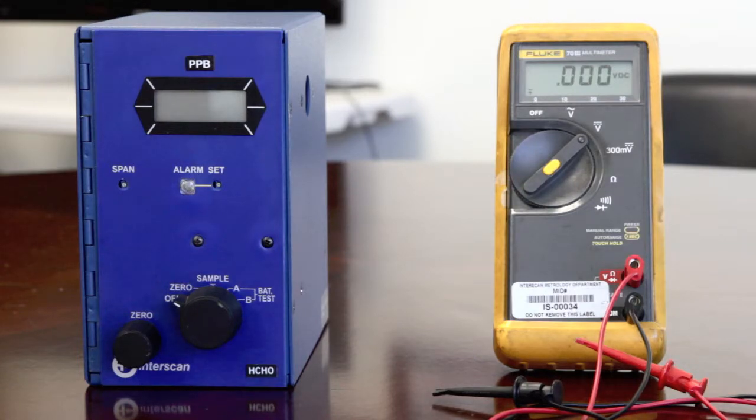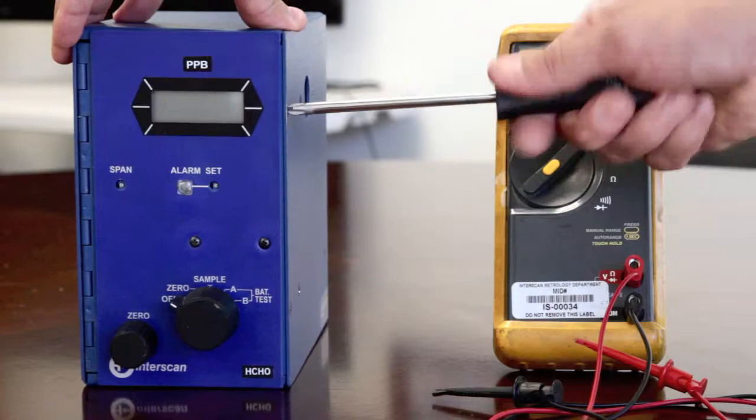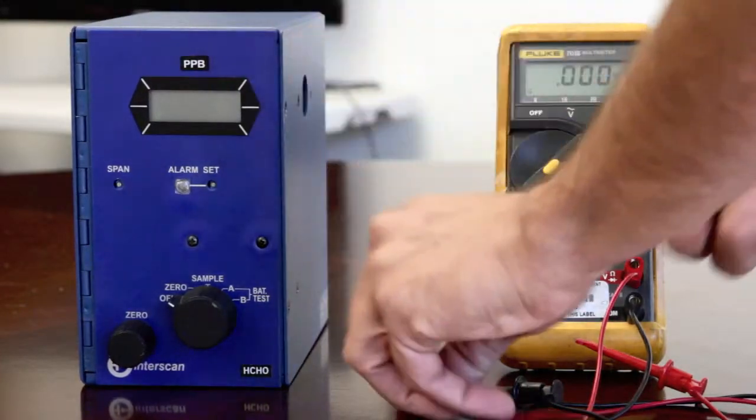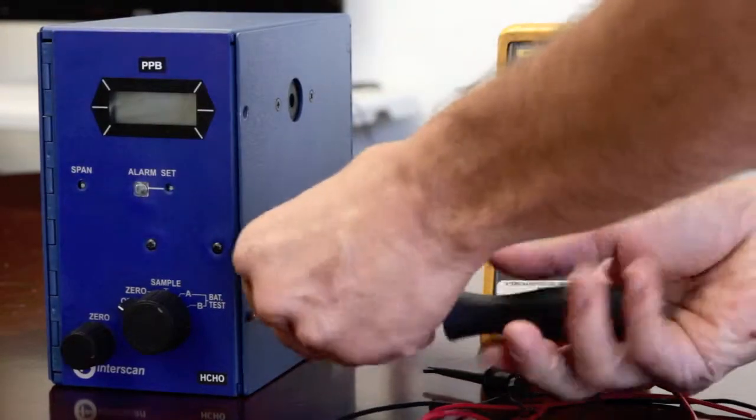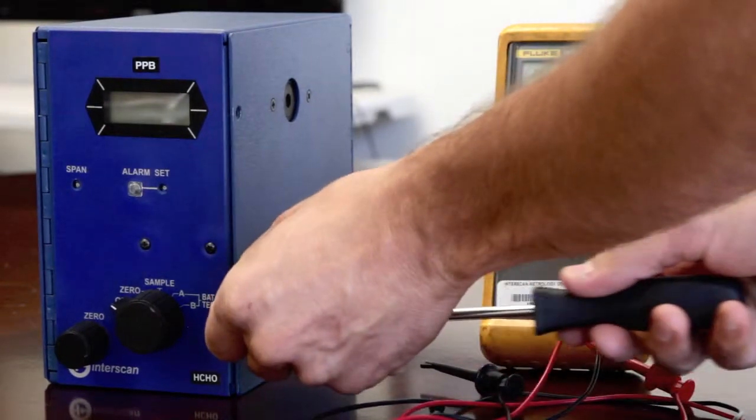To begin, open the instrument enclosure by removing the two screws located on the side of the instrument enclosure.